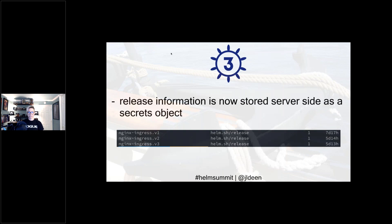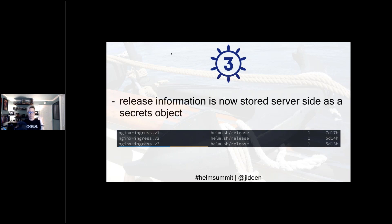Release information is now stored server-side as a secret object. For example, with an nginx release, if you do kubectl get secrets and specify the namespace, you'll see the .v1, .v2, .v3 entries returned as secret objects — and they'll even be tagged as helm.sh release objects.